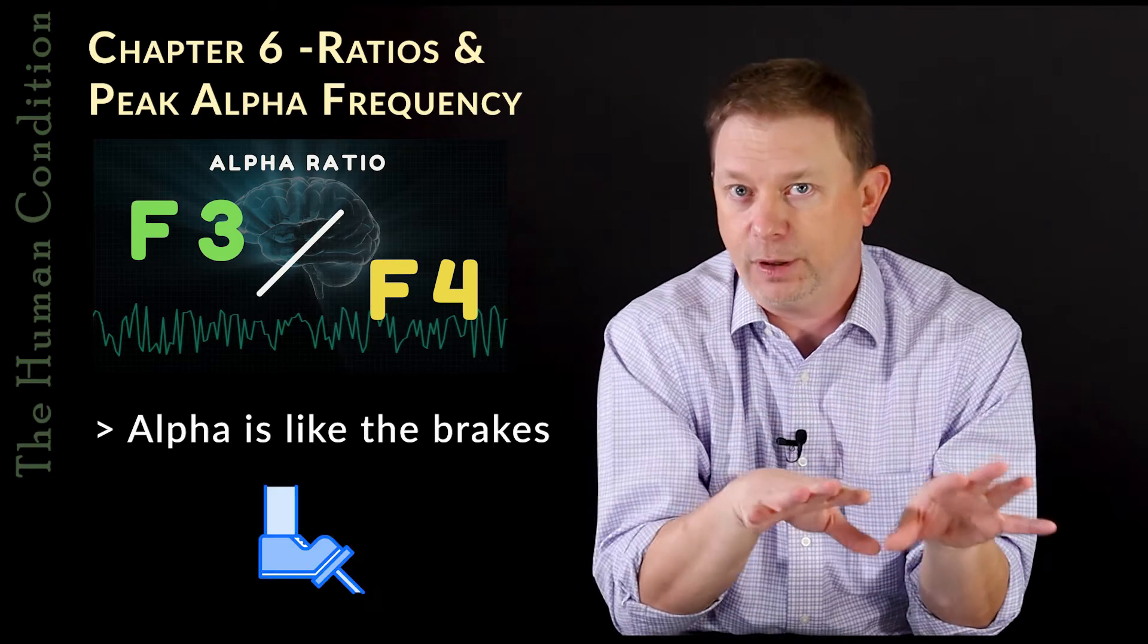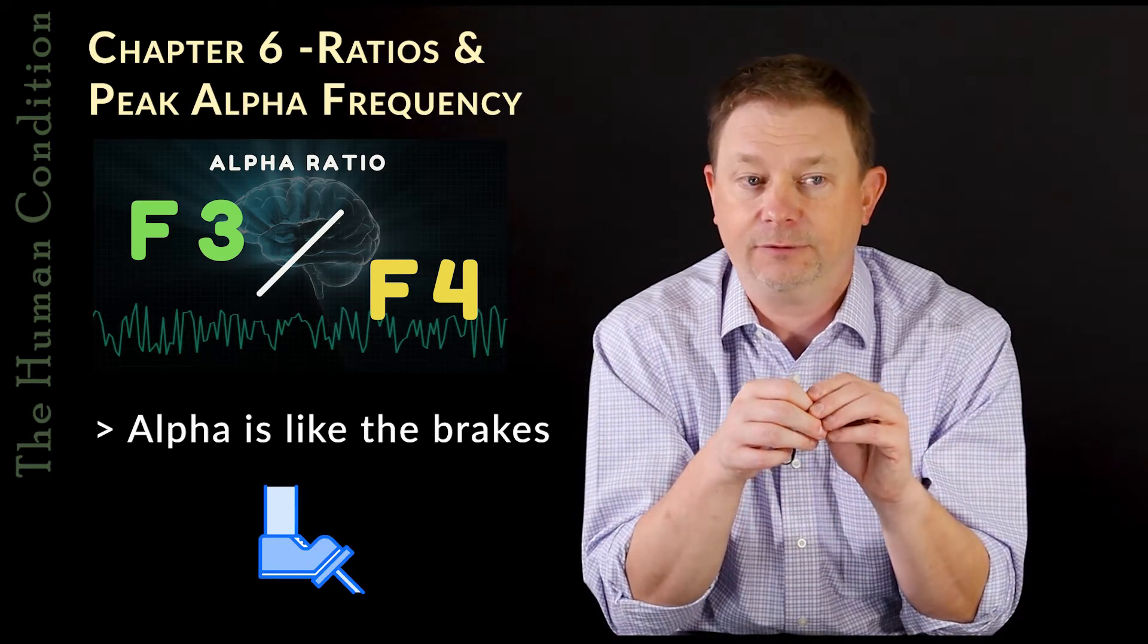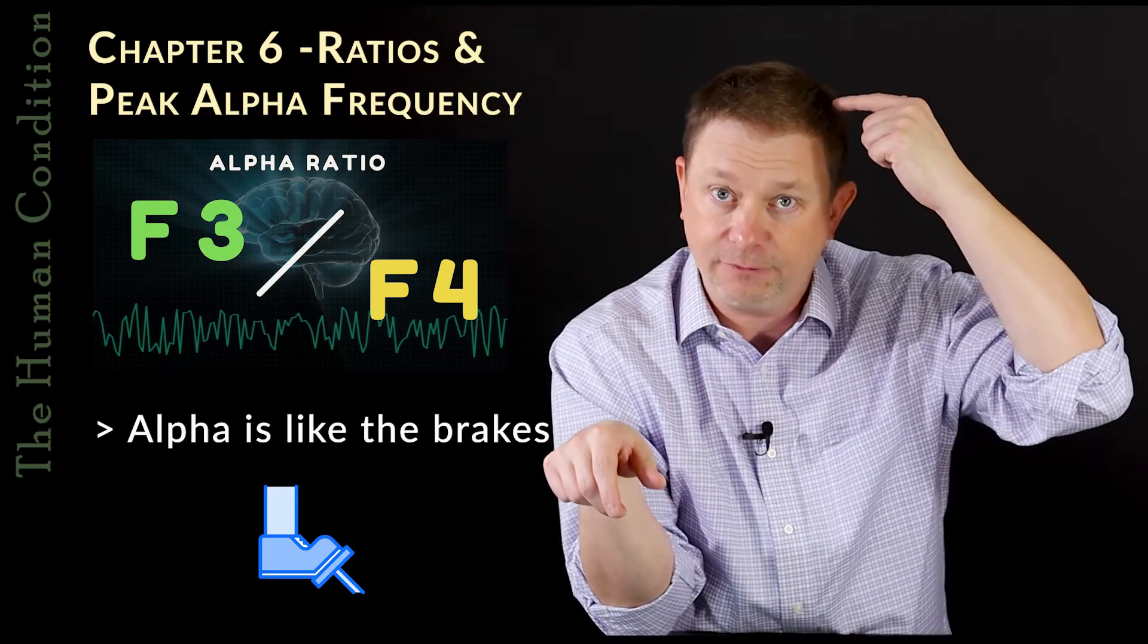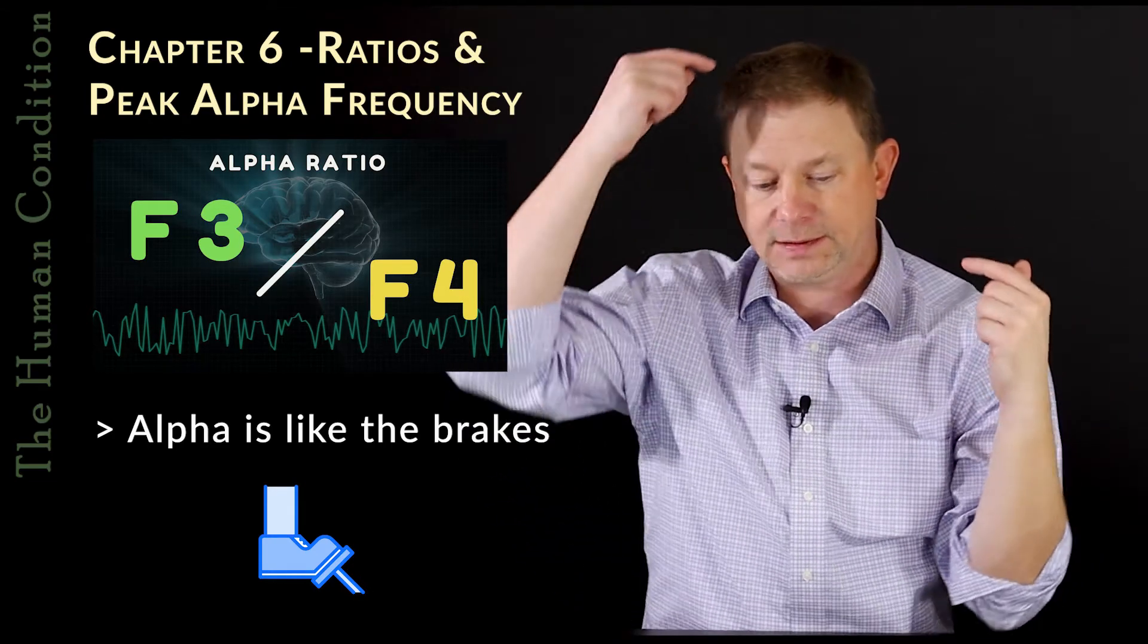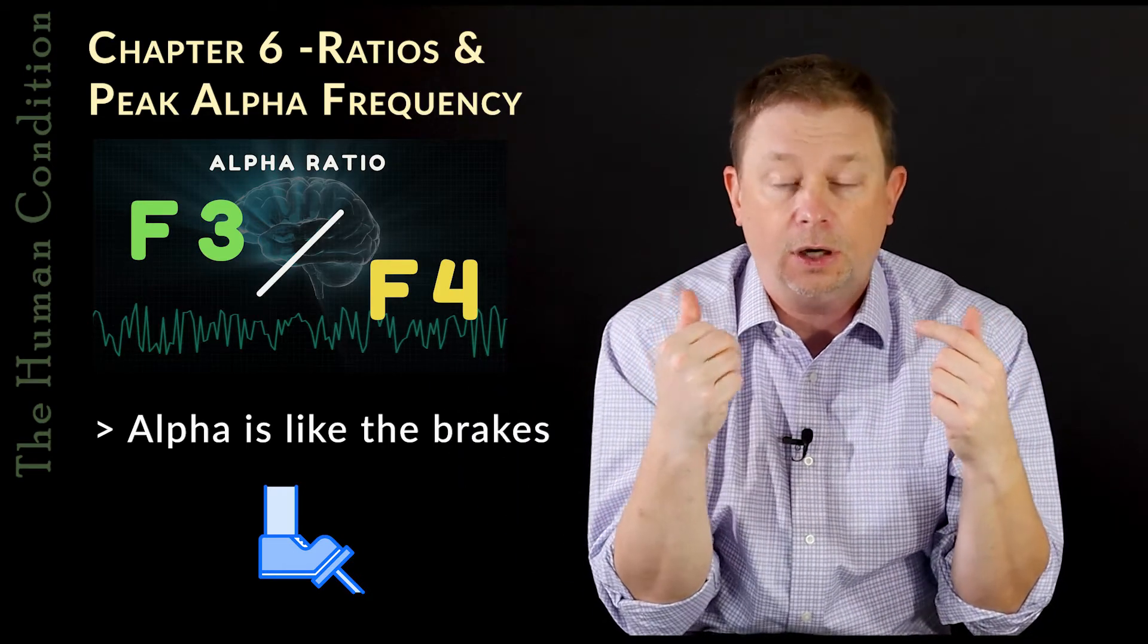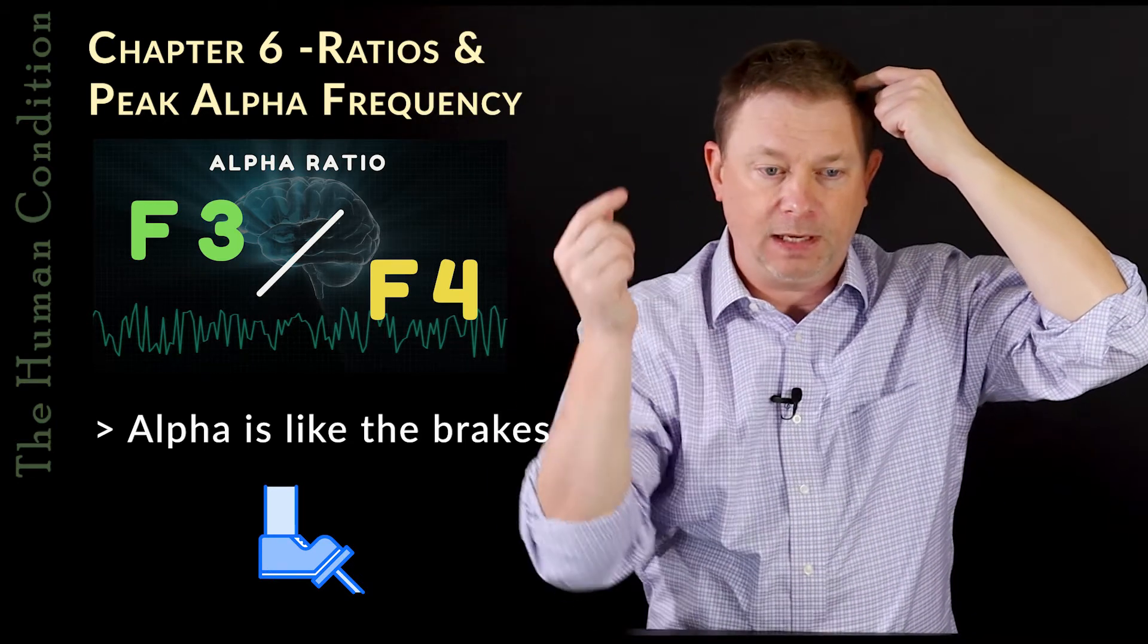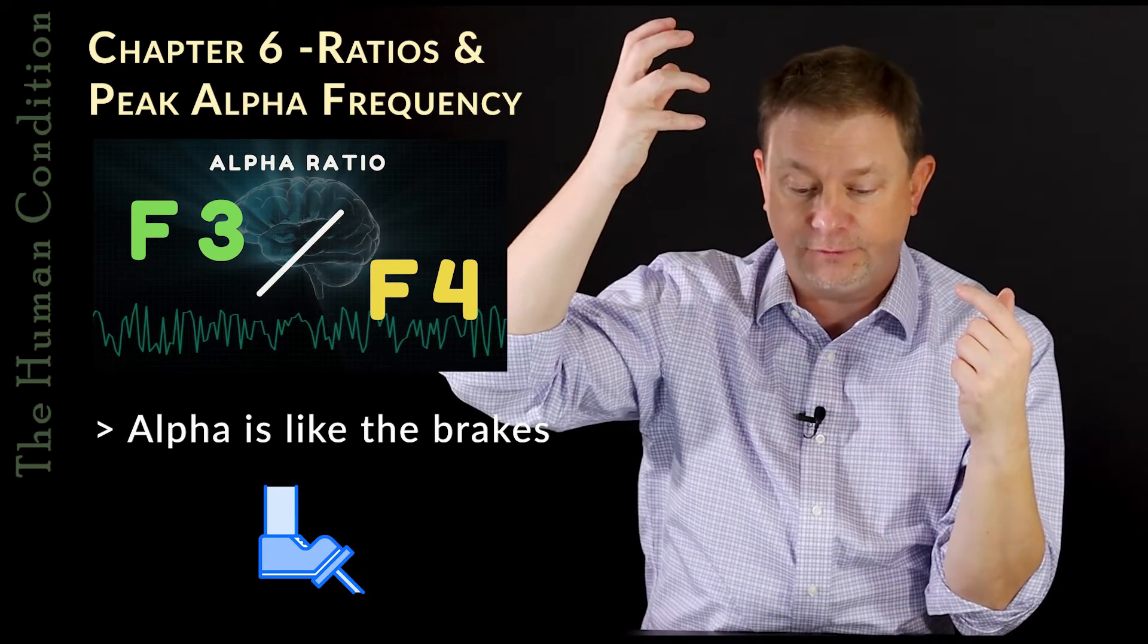So think of alpha as the brakes for the brain. So generally, if you're trying to measure activity and function and depression and anxiety, think of alpha as turning off the brain or the brakes. So high F3 alpha means lots of brakes on the left frontal lobe, and less F4 alpha means not as much brakes on the right frontal lobe. On the other hand, if there was very little F3 alpha, that means there's no brakes on the left F3. And in the right side, if there was lots of brakes, high F4 alpha, that would mean that we have lots of inhibition and not a very strong left frontal lobe.